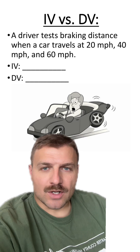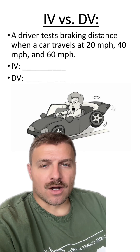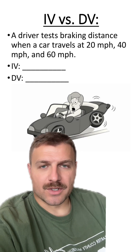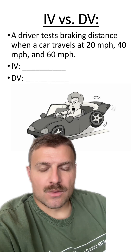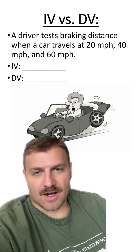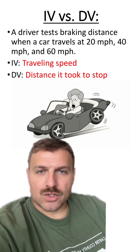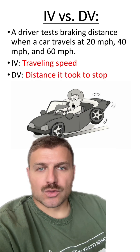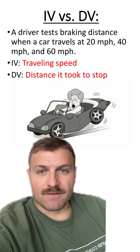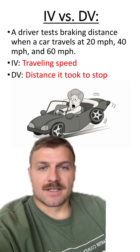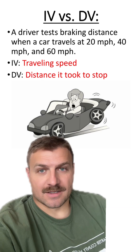Last scenario: a driver tests braking distance when a car travels at three different speeds. The independent variable is the traveling speed — that's 20, 40, and 60 miles per hour. The dependent variable is the distance it took to stop, or the braking distance.